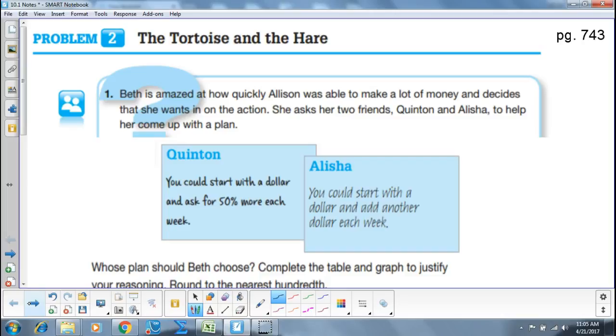Quentin says, you could start with a dollar, so the first time you do it, you get a buck. And then after that, you get 50% more, and 50% more, and 50% more. Alicia says, you could start with a dollar and add a dollar every time you do it. So you get a raise every time you do it.